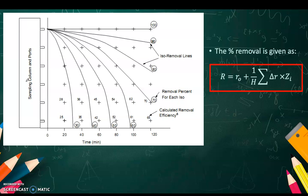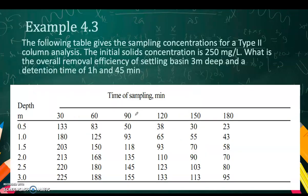This is shown in example 4.3 in your textbook page 121. This is an example of how you can determine how high, how big your settling point and settling column, and what is the removal. This is to solve for type 2 settling operations. You need to plot this graph for example 4.3.